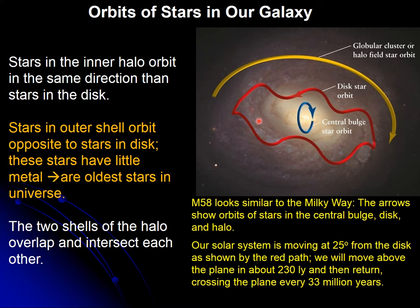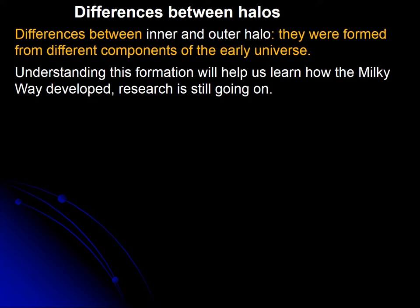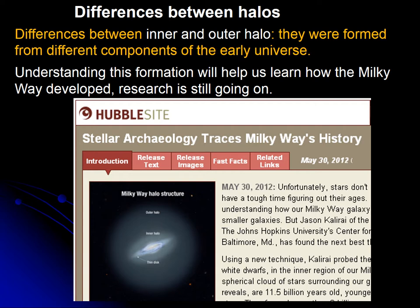The shells of the halo intersect and the stars can go from one halo to another and then come back. Our solar system is moving right now at about 25 degrees from the disk, and we're going to be moving above the plane in about 230 light years, then returning every 33 million years. The halos come from different components of the early universe, as indicated by their metallicity, and understanding this gives us an idea of how the Milky Way was formed — this is a topic of current research.